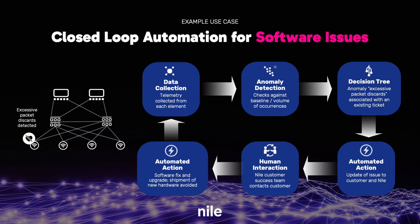In this example, cognitive decisions detected an anomaly in the number of interface discards in one of the access points. Cognitive decisions updates the access point's digital twin with the anomaly, then searches for existing software issues that match the signature of the problem. This is where the intelligence comes in. After finding the matching issue, it raises an alert in Nile Autopilot capturing all the information. Cognitive decisions also takes a corrective remedial action by either rebooting the access point or redirecting the traffic towards a different access point. It also automatically informs the customer success manager and the customer about the need to update the access point software.